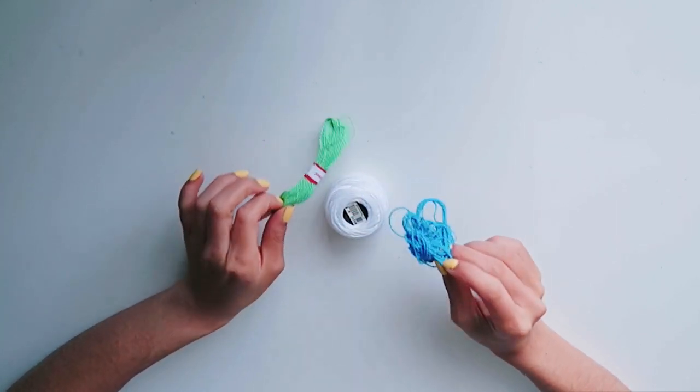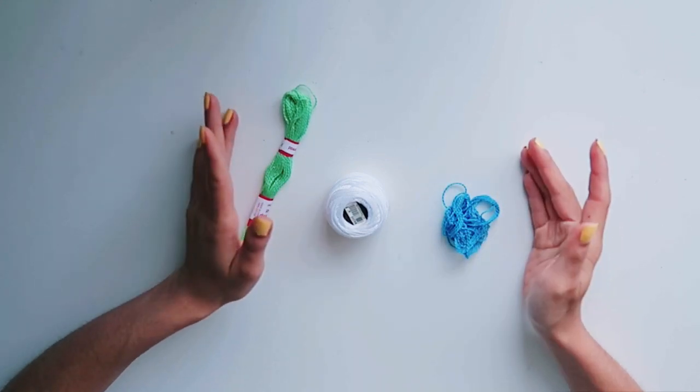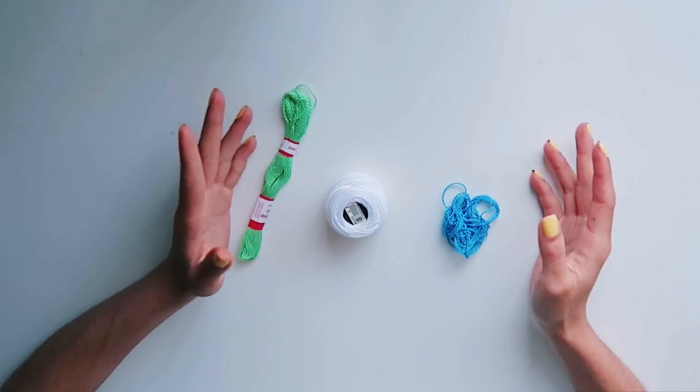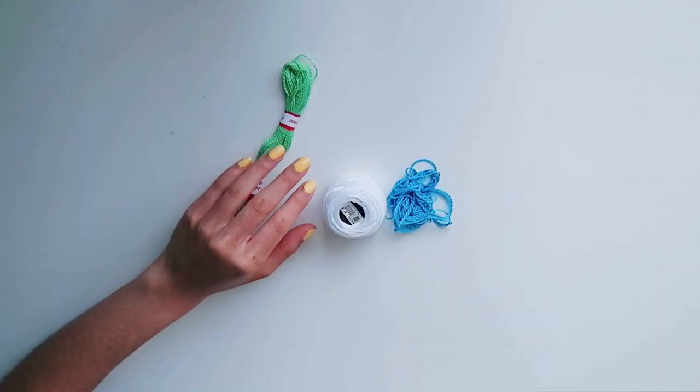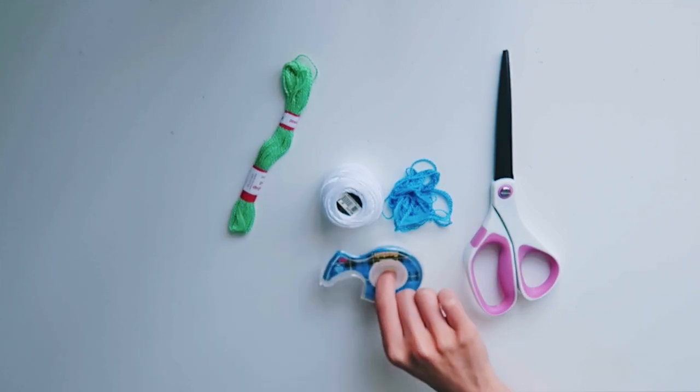The first thing you're gonna do for this design is choose some string. You can use as many colors as you want, but for all of these examples today I'm gonna be using three colors to make it simple. Basically, if you use more string or more colors, your bracelet is gonna be thicker in width. You're also gonna be needing scissors and I recommend having tape.